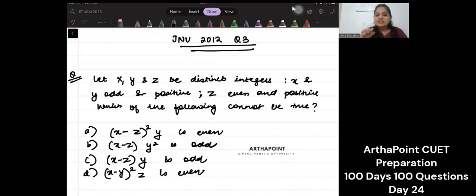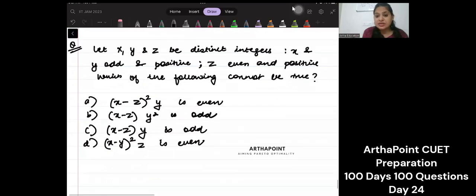Let x, y and z be distinct integers where x and y are odd. If you don't understand these kinds of questions directly, you can go ahead and take some values to solve them also. There is nothing wrong with that.